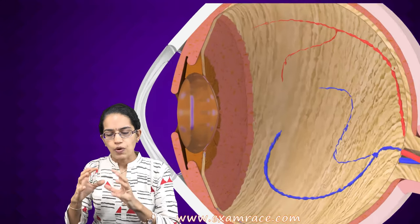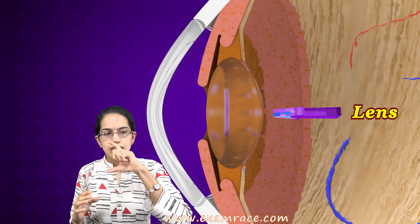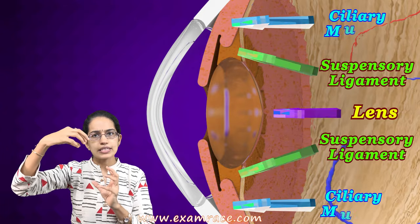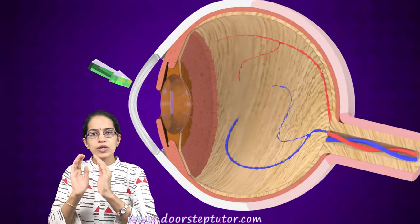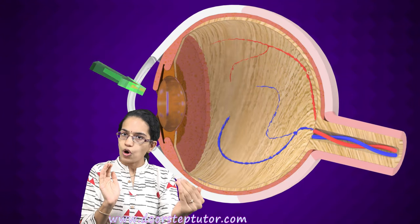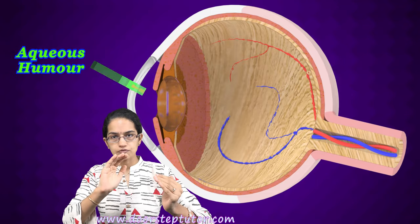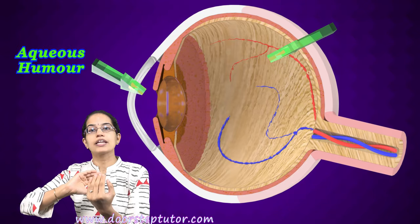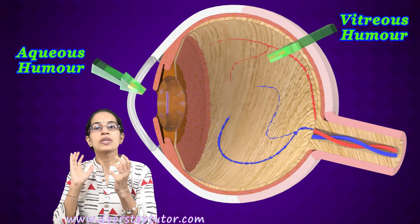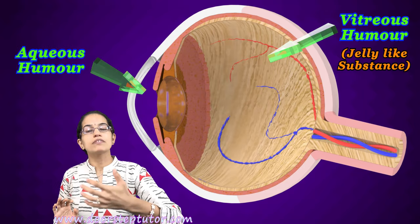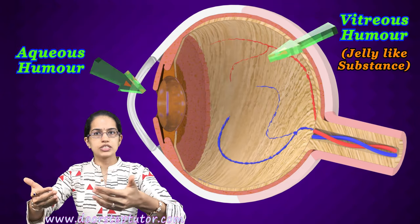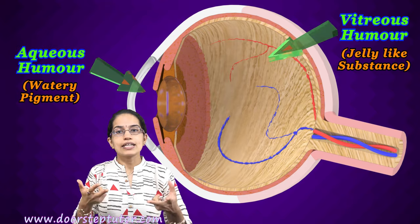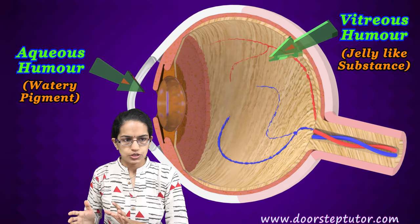Another important concept is the lens. This lens is suspended by the suspensory ligaments and is supported by the ciliary muscles. Between this lens and the outermost cornea, you have the aqueous humor that is filled in, and between the lens and the back side of the eye you would have the vitreous humor. Vitreous humor is a jelly-like substance, while aqueous humor — present between the lens and the cornea — is a watery substance. That is a major difference between the two.